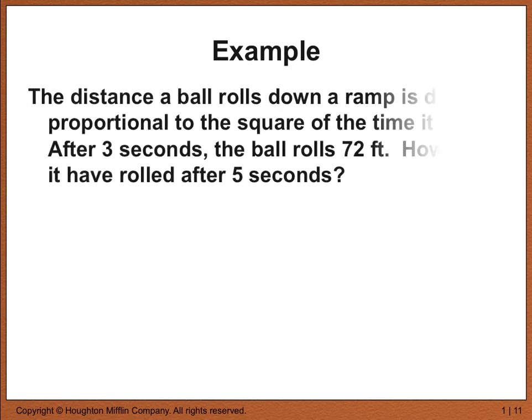Here's an example involving direct variation: the distance a ball rolls down a ramp is directly proportional to the square of the time it rolls. After three seconds, the ball rolls 72 feet. How far will it have rolled after five seconds? Based on your notes you should be able to solve this on your own. Remember that when doing half-life problems you had to do them in two parts — first calculate the rate, then answer the question. You'll follow a similar process here: first find k, then answer the final question. Pause the video, try it on your own, then resume when you have an answer or if you get stuck.